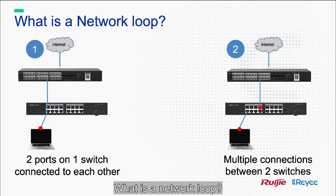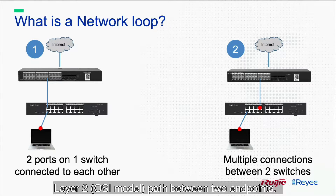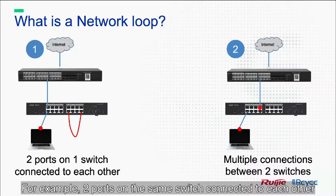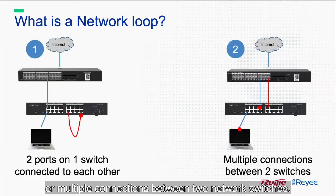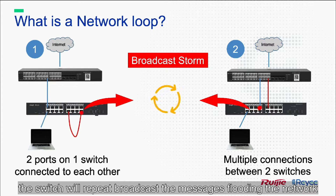What is a network loop? A network loop occurs when there are multiple layer 2 paths between two endpoints. For example, two ports on the same switch connected to each other, or multiple connections between two network switches. The loop creates broadcast storms, packets forwarding on every port. The switch will repeatedly re-broadcast the messages, flooding the network.